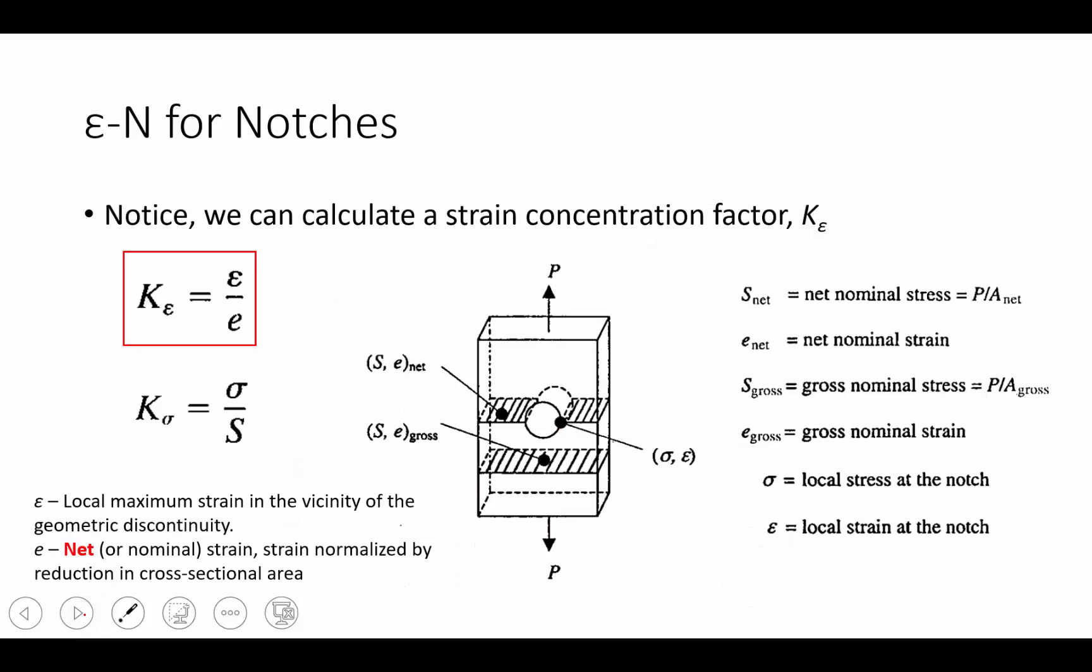This concept on strain, where the strain is increasing, allows us to think about the concept of a strain concentration. We can calculate a strain concentration factor, K_eta, as equal to eta divided by E, where eta is the local strains in the vicinity of the notch, and E is the net strains that are measured over some reduced cross-sectional area, a gauge length across that area.